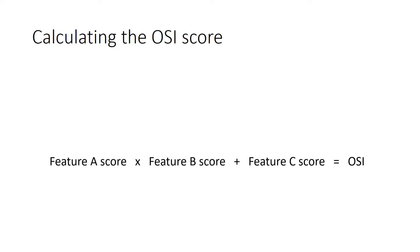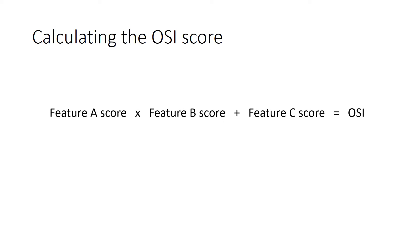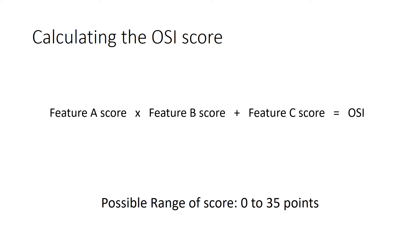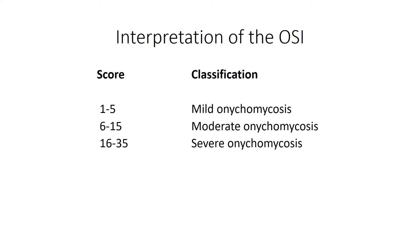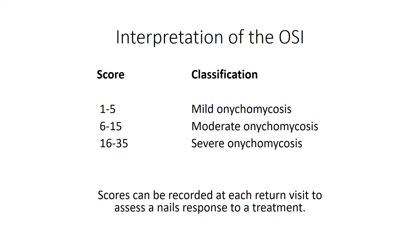So how do we calculate the OSI score? Very simply: multiply your Feature A score by your Feature B score, then add 10 points if any of the Feature C criteria are present. That gives your final OSI score. The total range available is 0 to 35 points. The authors of the paper suggest that a score between 1 and 5 classifies as very mild onychomycosis.